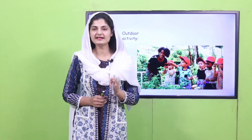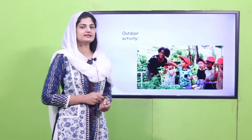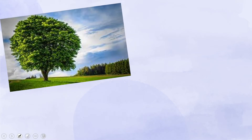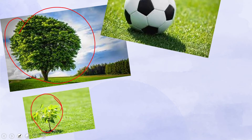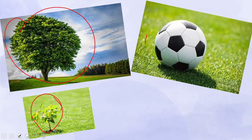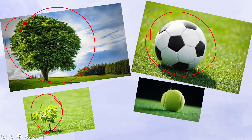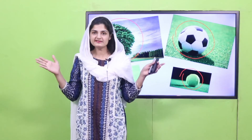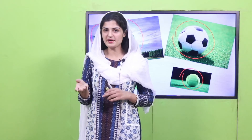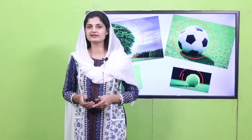Hopefully you are back and you have explored big and small things in the outside environment. Let me share what I found: I found a big tree and a tiny plant — the tree was big and the plant was small. I also found a big soccer ball on the ground and a small tennis ball. You can always compare the sizes of things around you.